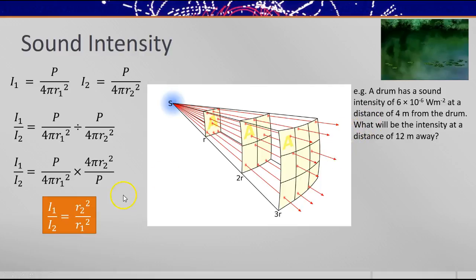I'll just put that into an example for you, because we can use this formula to work out how loud a sound will be in a different location without working back and working out the original power of the sound. So the drum has a sound intensity of this value, and it's four meters away. What would the intensity be 12 meters away? Well, it's obviously going to be lower, because it's further away. But it's not 12 over 4 times lower. It's 12² over 4² times lower.